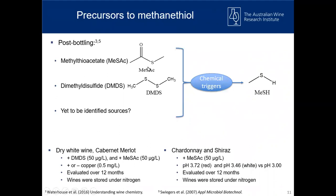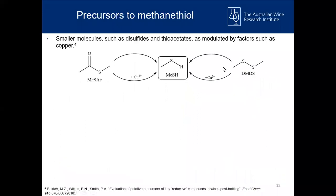Because thioacetates are specifically prone to acid hydrolysis, we designed a second experiment to evaluate pH effects. We took a Shiraz and a Chardonnay and kept their initial pH unadjusted — 3.72 for the red and 3.46 for the white — but then also dropped the pH to 3.0 to see what that decrease in pH would do to methanethiol production from the thioacetate. These wines were evaluated over 12 months, stored under nitrogen. We were interested in whether the thioacetate would release methanethiol with or without copper, and whether the disulfide would release methanethiol with or without copper.